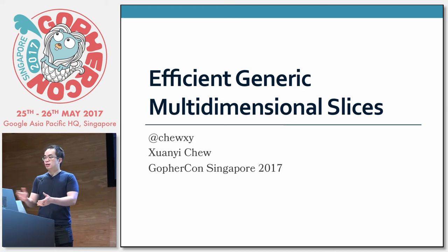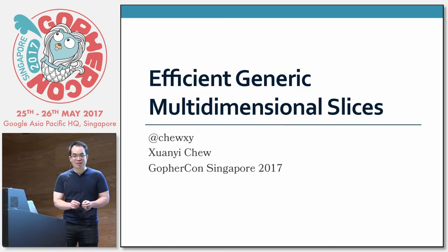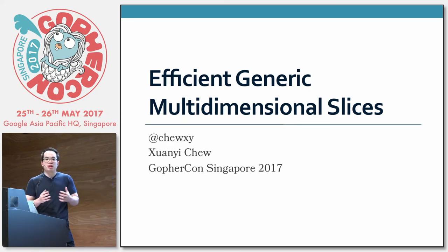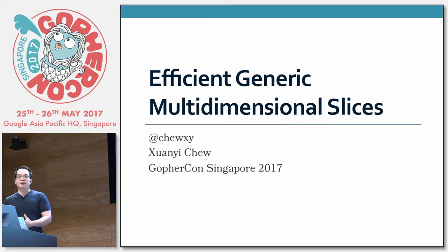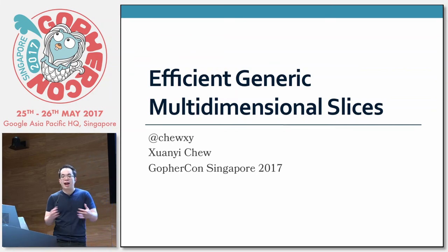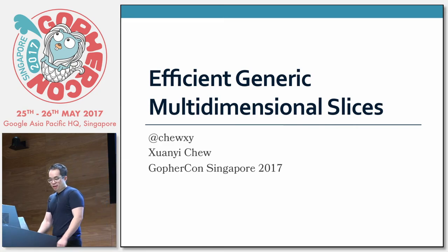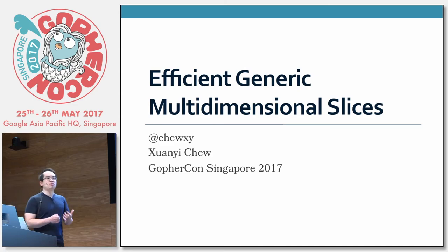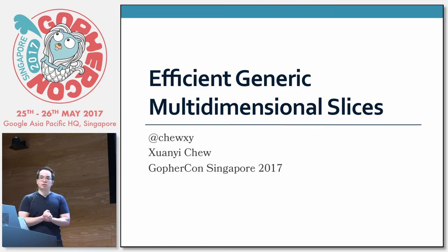Hi, I'm Xuanyi, and I'm here to talk about efficient generic multidimensional slices. That's a mouthful. Multidimensional slices have been a topic of great interest in the Go community, and last year Grissima gave a talk at .go on how you can hack the Go compiler to prototype ideas, using multidimensional slices as an example. I'm not going to talk about that — I want my library to work on standard Go. Instead, what I'll be talking about is a story of three attempts at making these things work. And because multidimensional slices may not be a topic of much familiarity, I'm going to introduce the concepts and what is needed for a multidimensional slice.